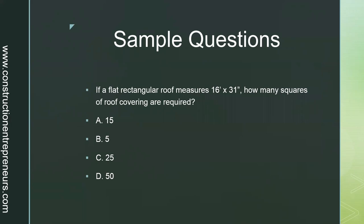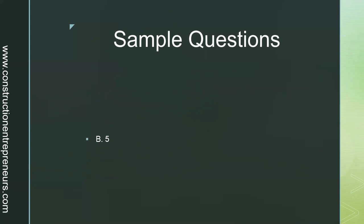Let's go over some sample questions you may find on the examination. You can pause the video to try to answer these yourself, then come back to check if you got the right answer. First sample question: if a flat rectangular roof measures 16 feet by 31 inches, how many squares of roof covering are required? A. 15, B. 5, C. 25, or D. 50? The answer is B — 5.